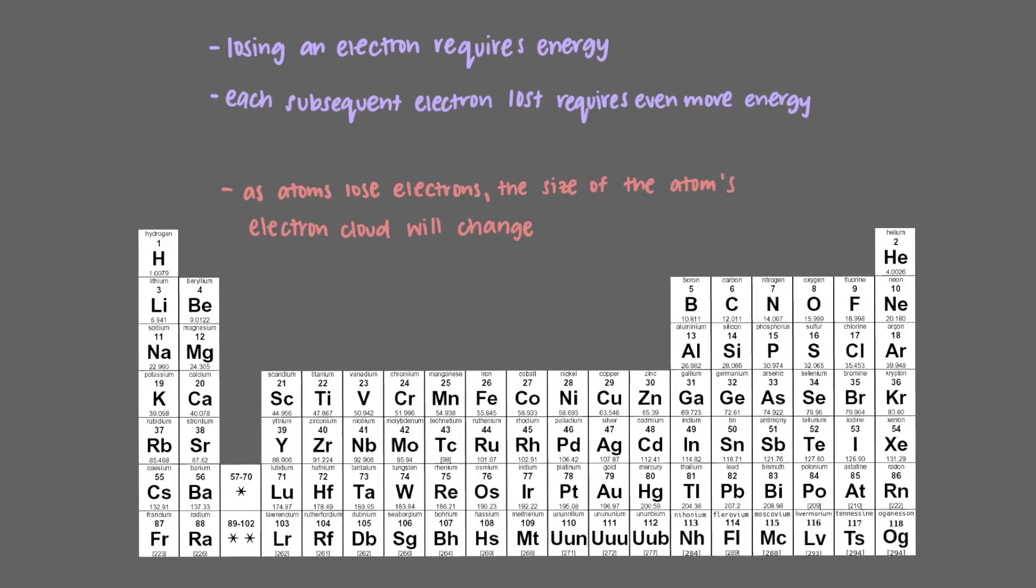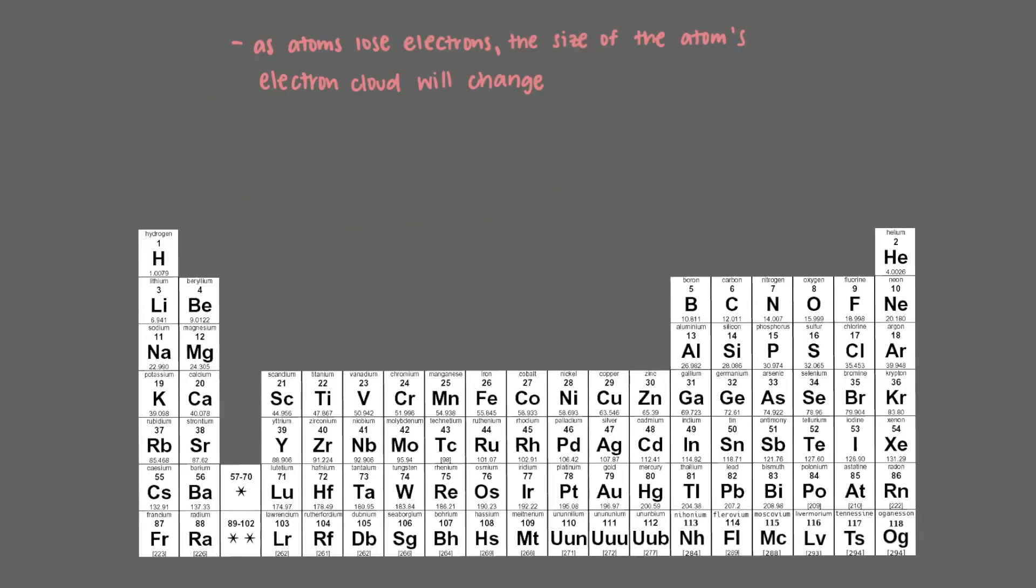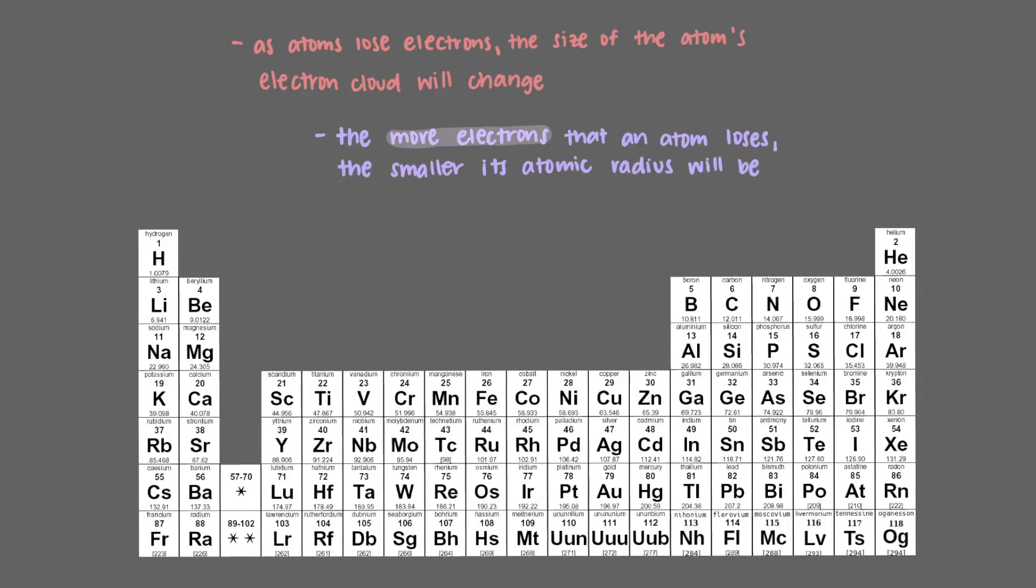Which of the following species do you expect to be the smallest? The more electrons that an atom loses, the smaller its atomic radius will be. The size of the atom is determined by the size of its largest electron waves.